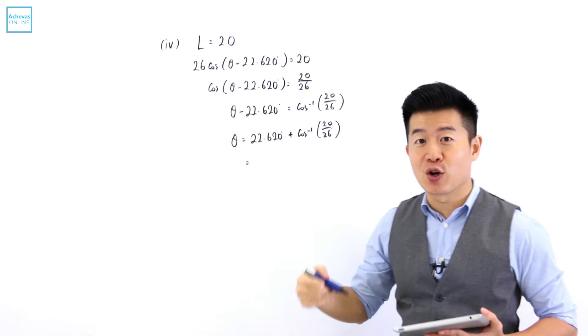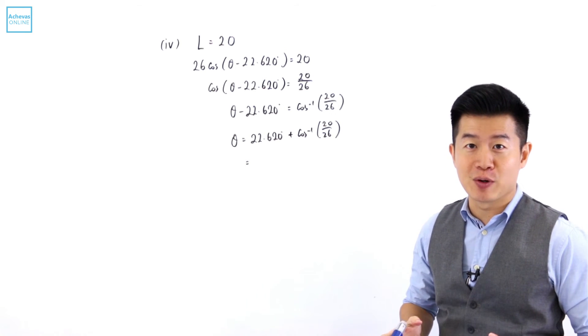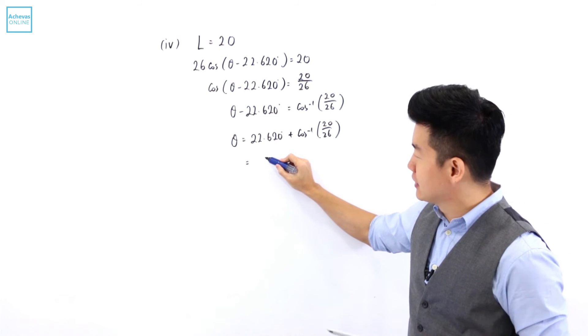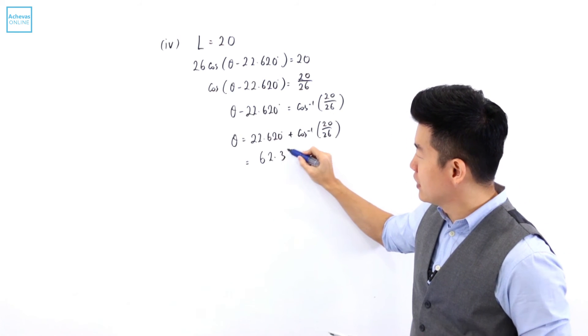Knowing that theta according to what we can observe from the diagram is going to be an acute angle, evaluating this, it is 62.3 degrees.